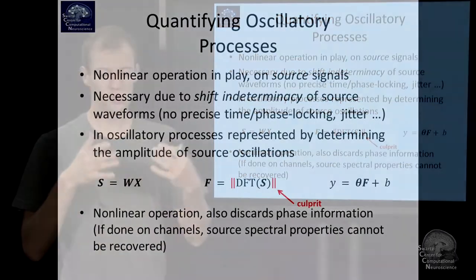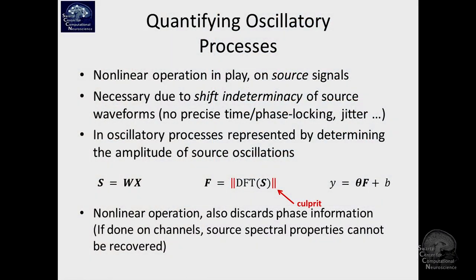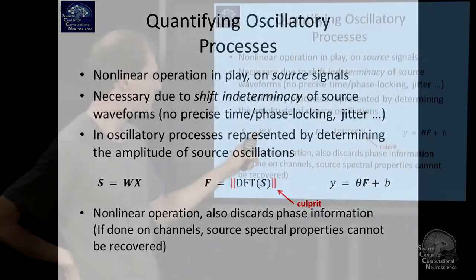So this is a matrix that maps onto three sources, estimates the time courses for three sources. We would get a three by, say, a thousand time points matrix here for one trial.